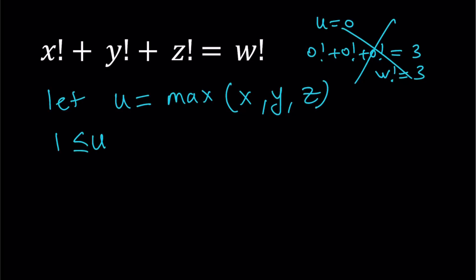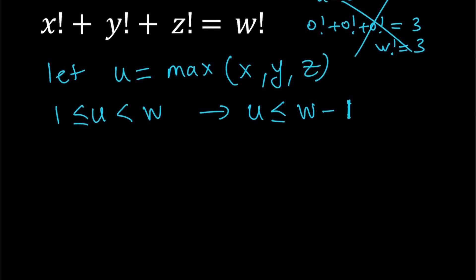Since we're adding non-zero factorials, we can safely say that u is going to be less than w because I'm adding something non-zero to it. So since u is less than w, if I decrease w by one, there's a chance they're going to be equal. We can safely say that u is less than or equal to w minus one.